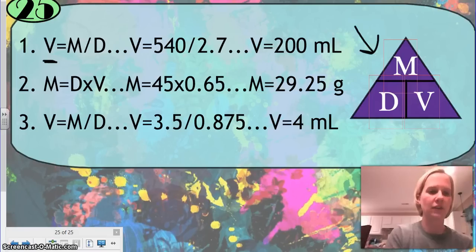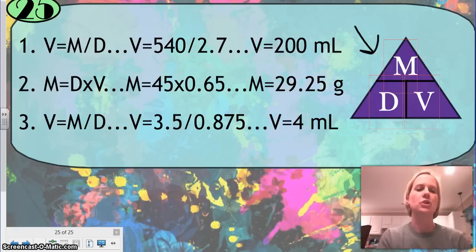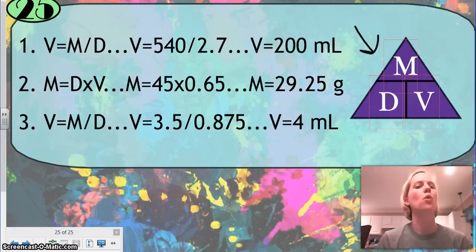I've gone through and I have calculated out your questions. Number one, you should have gotten 200 milliliters. Number two, you should have gotten 29.25 grams. And, number three, your volume should have been 4 milliliters.